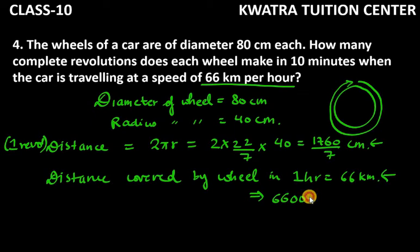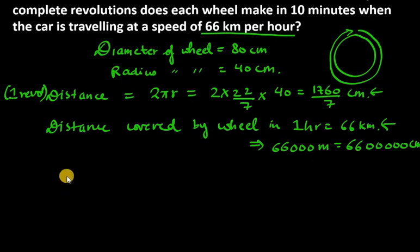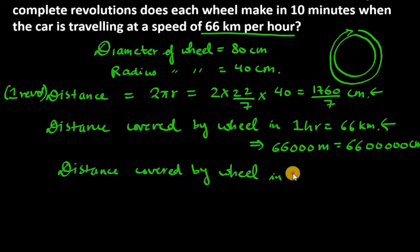So this will be 66,000 meters. And if we need to do cm, then there will be 5 zeros in it. So this will be your cm. Now we need to show the distance covered for 10 minutes. So now we are talking about 1 hour. What will happen in 10 minutes?